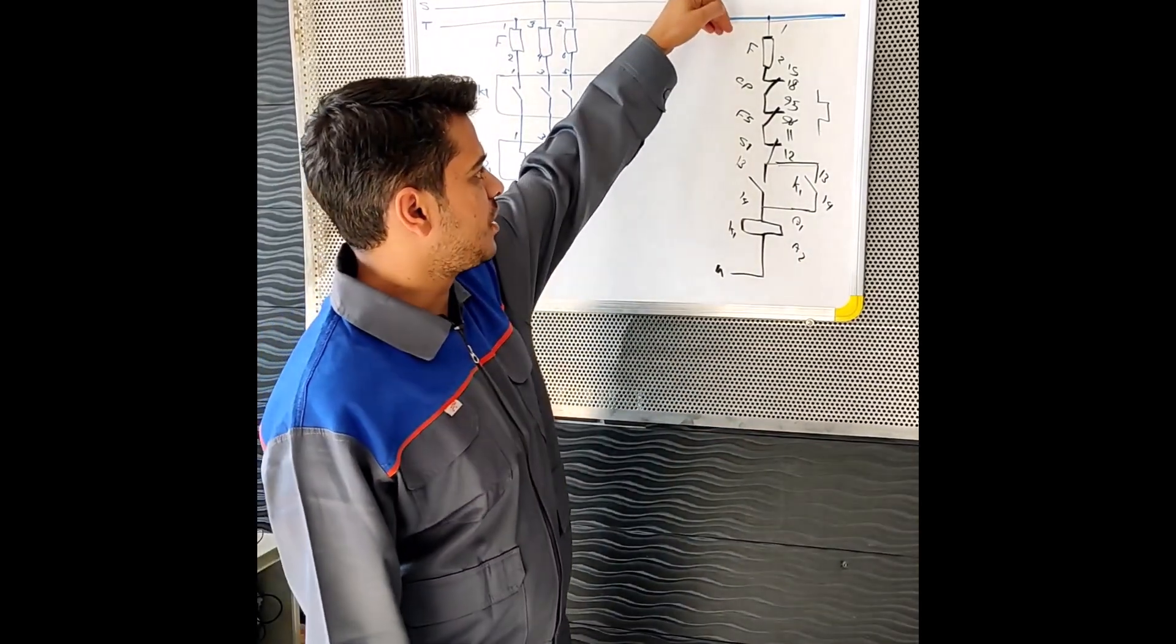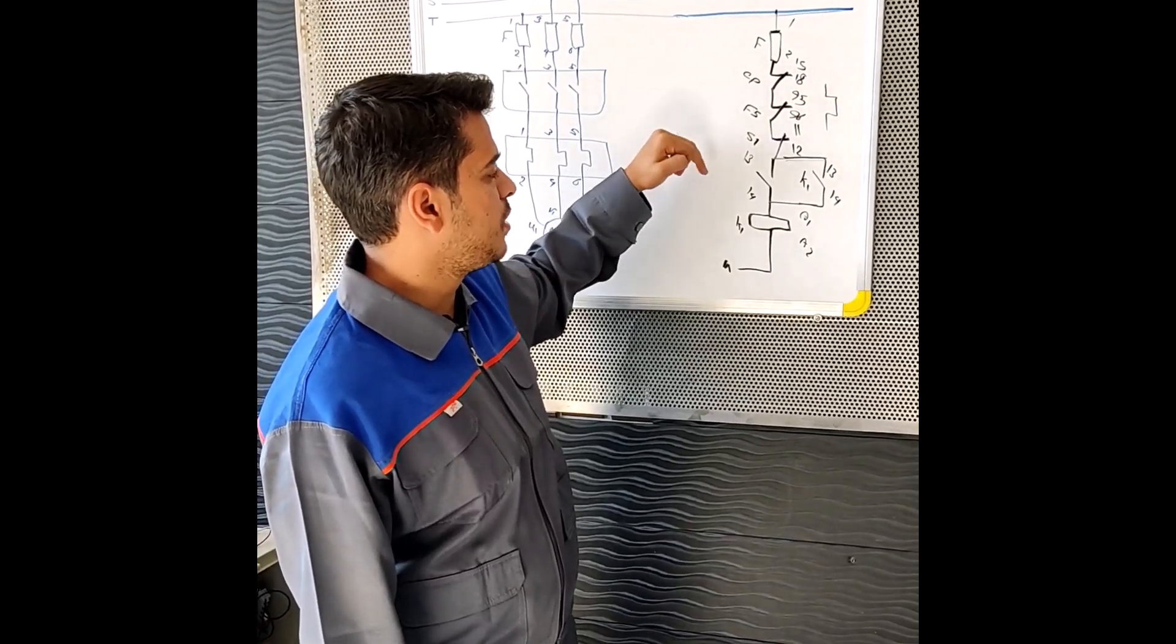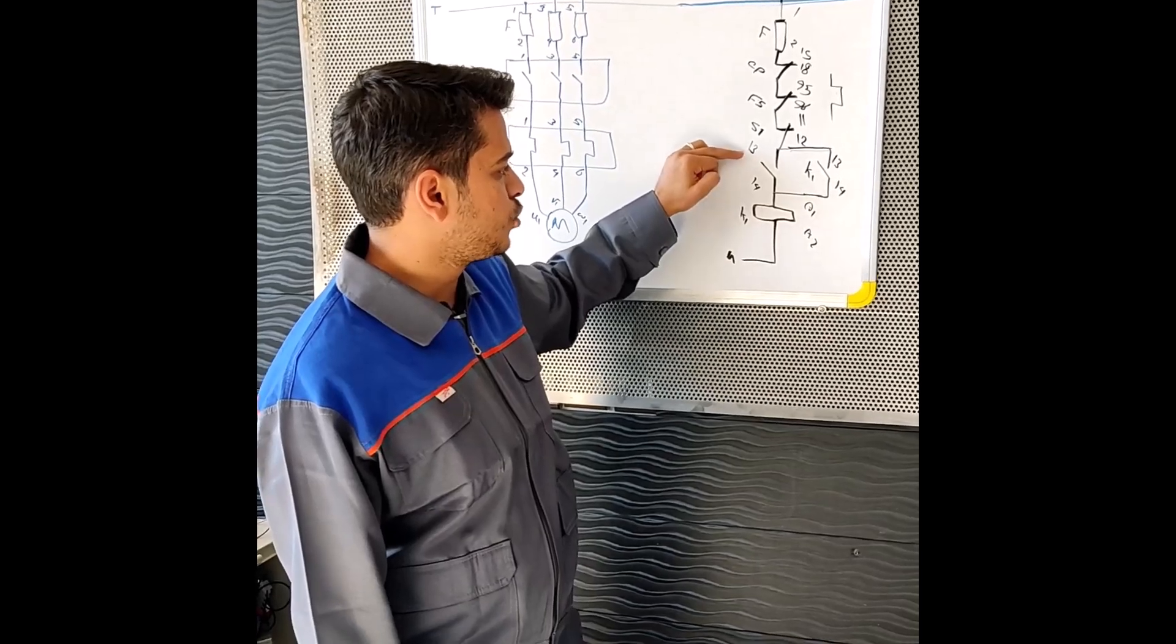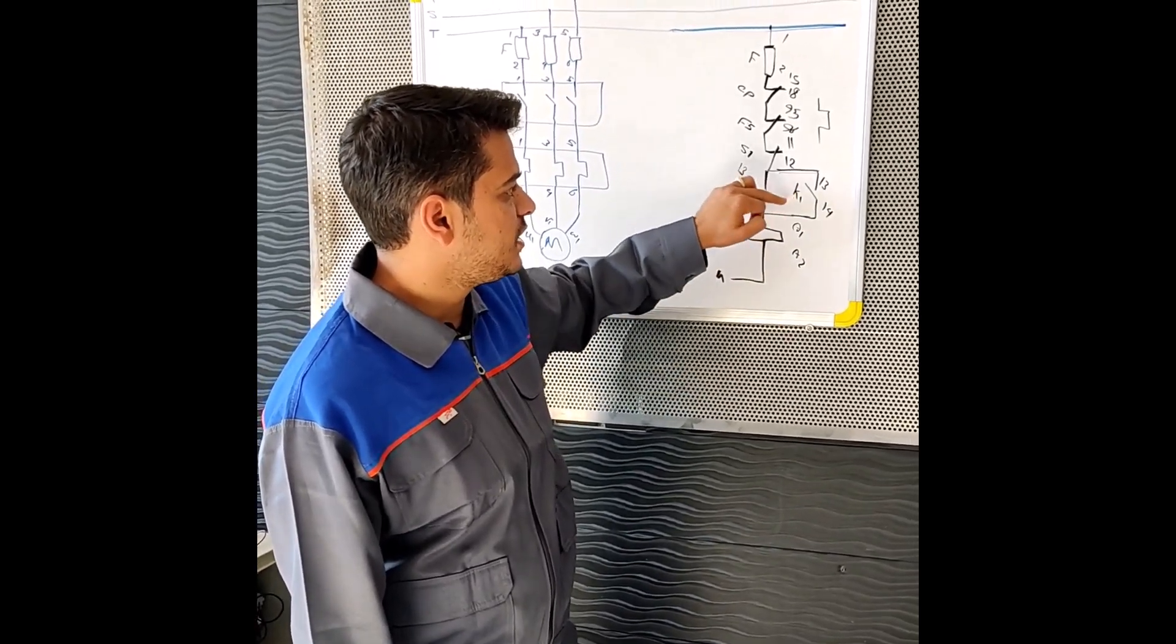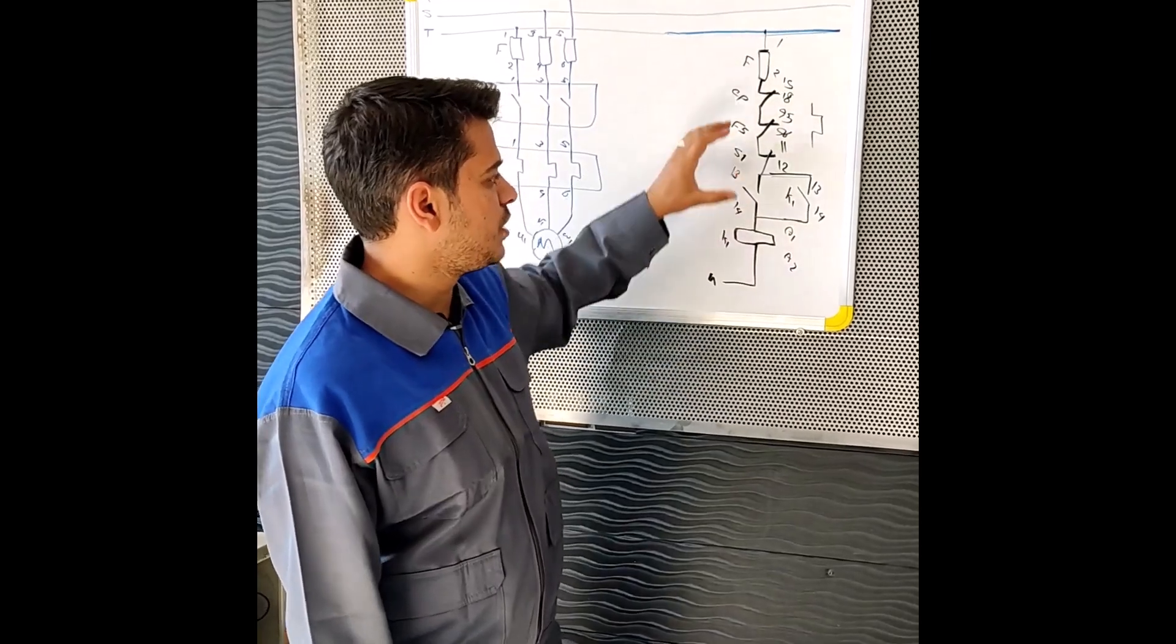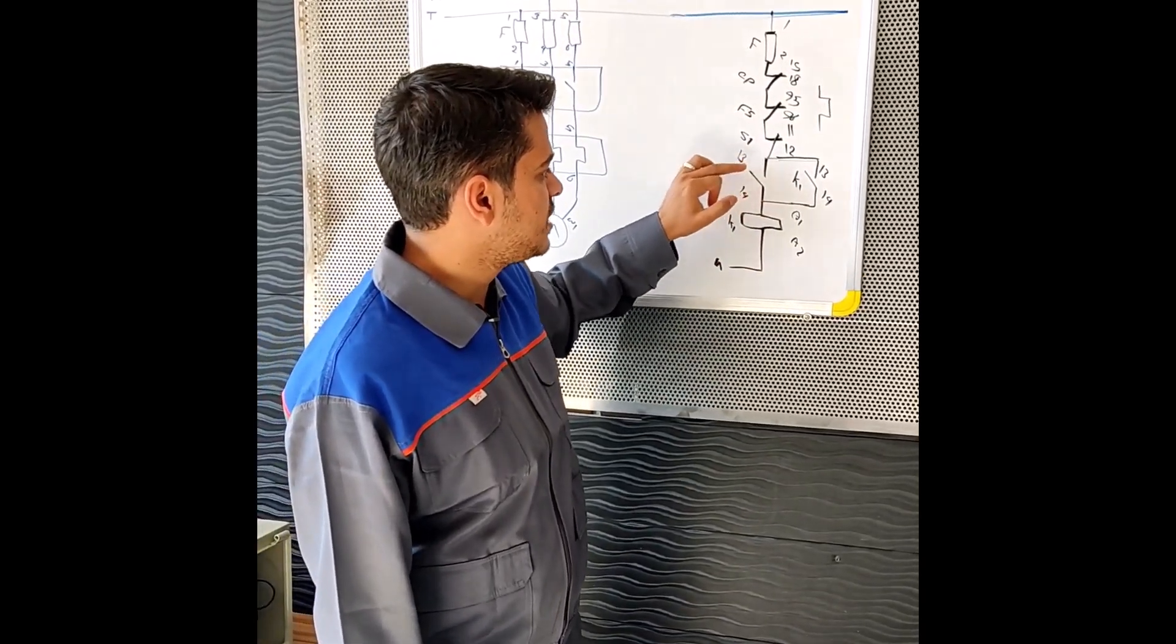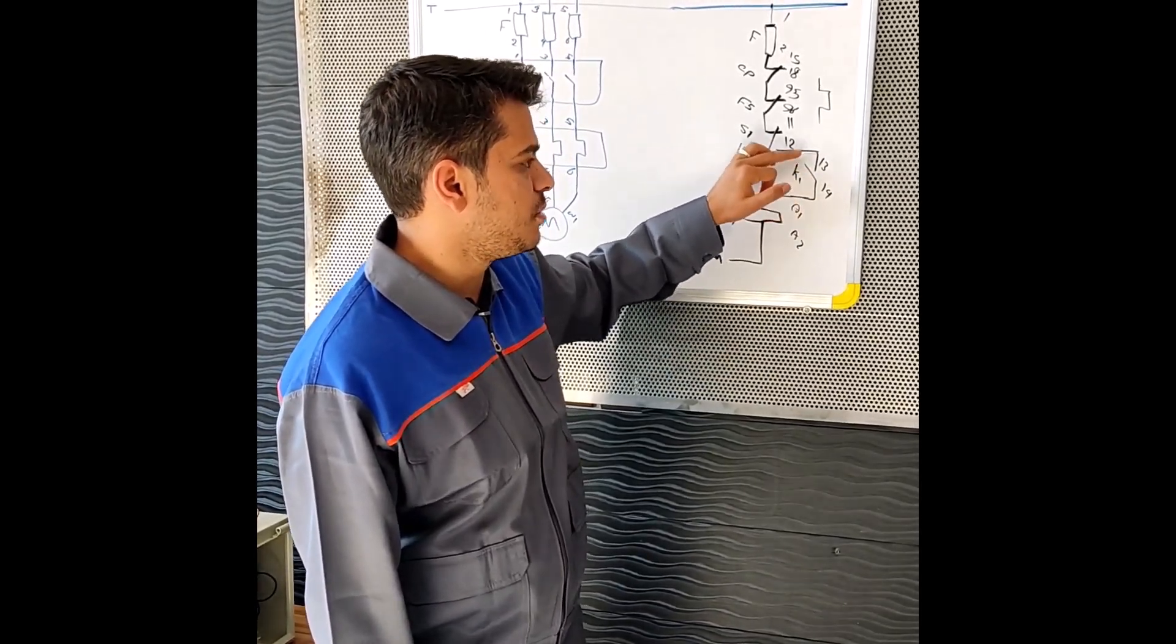When you want to start the engine momentarily, you have to remove this part. The electricity from the fuse and the pulse control and bimetal reaches the stop key. After the start, it reaches the contactor coils, and this part should be deleted to start the engine instantly.